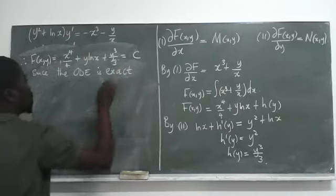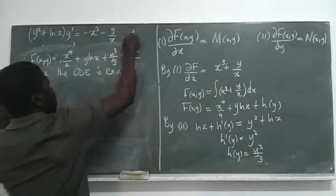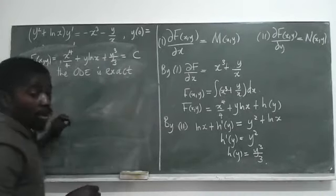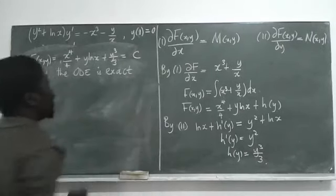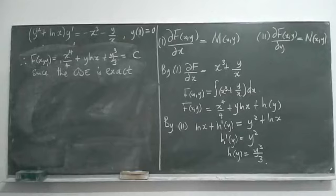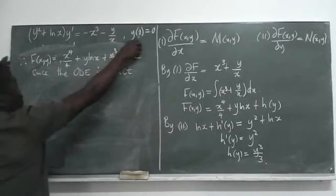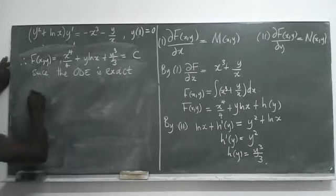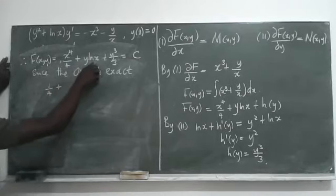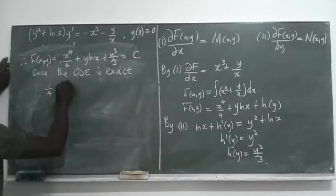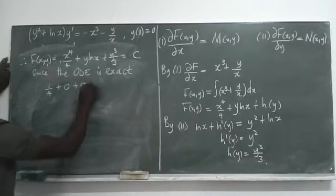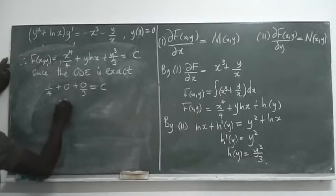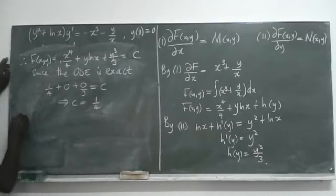We were given the condition y(1) equals 0. Substituting x equals 1 and y equals 0: one quarter plus ln(1) times 0 plus zero cubed over 3 equals C. Since ln(1) is zero, we get C equals one quarter.